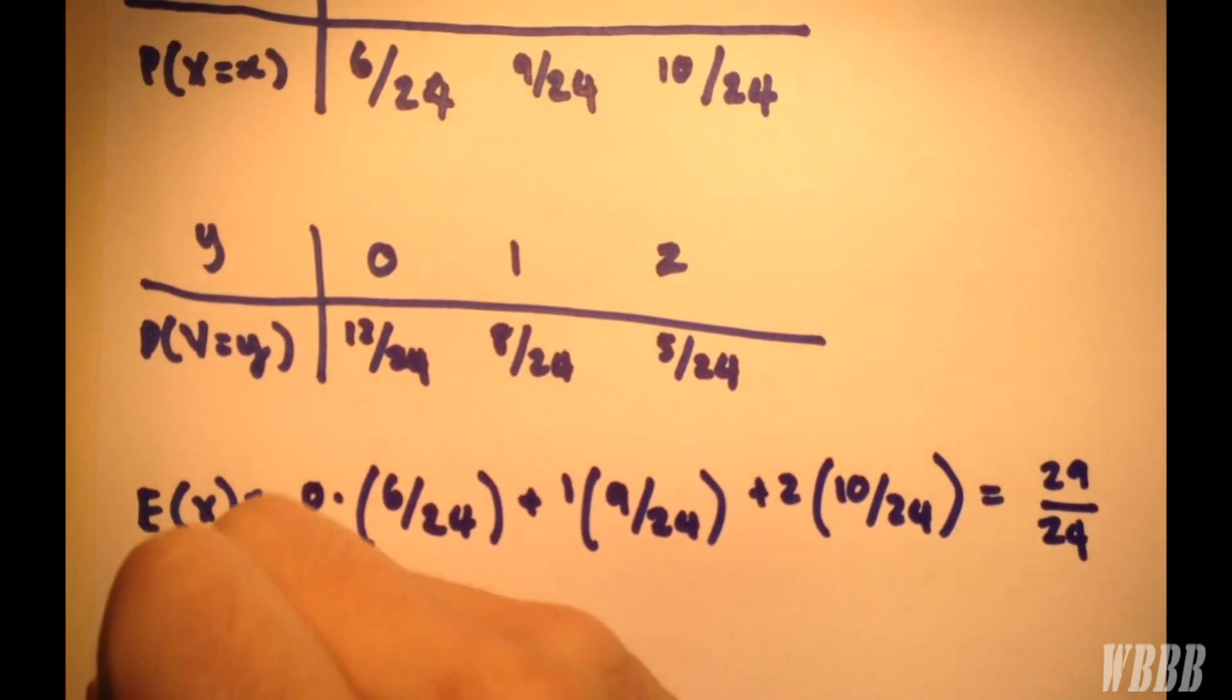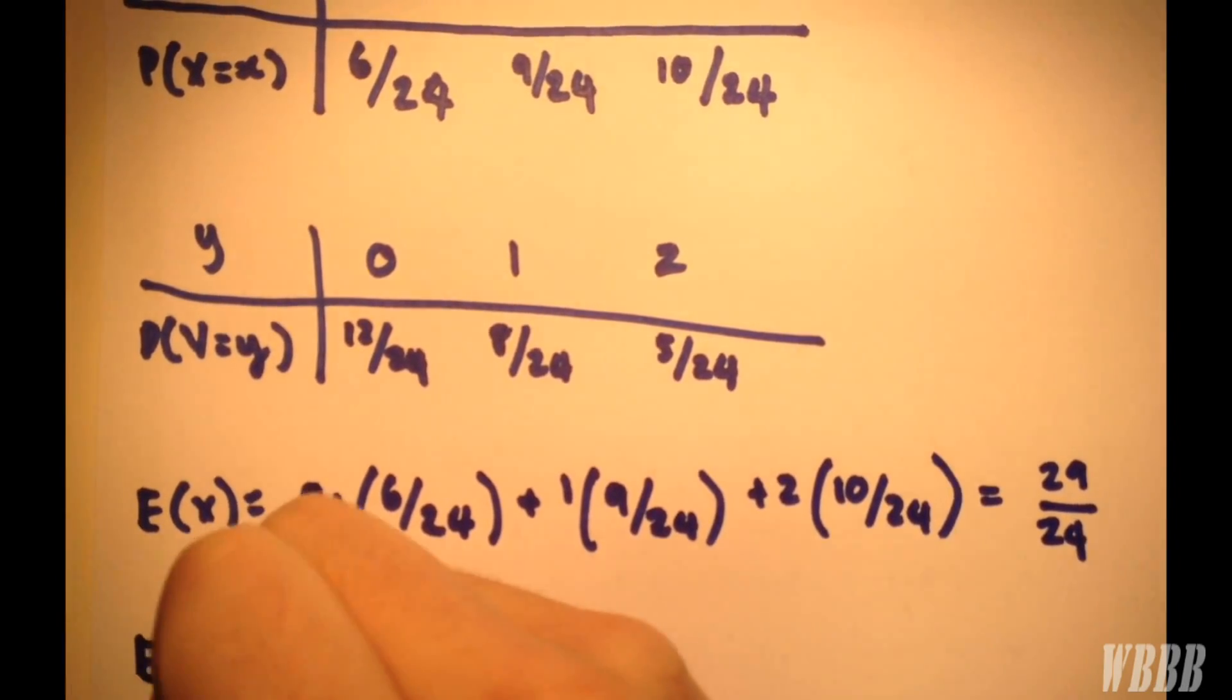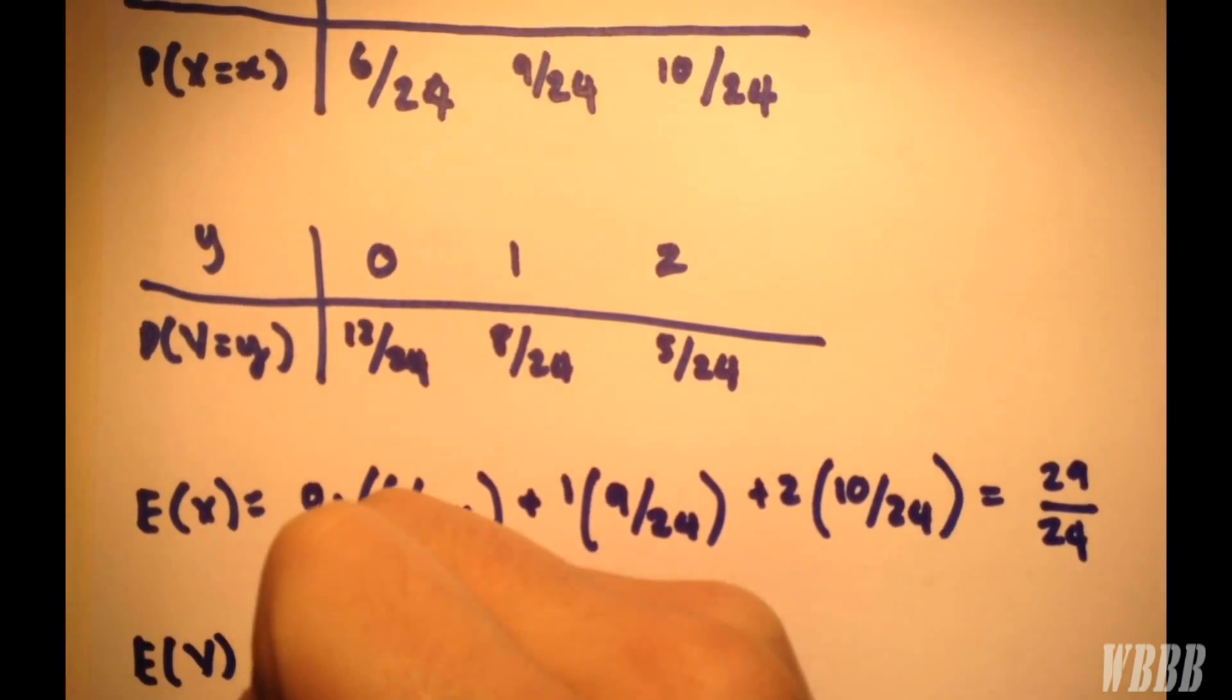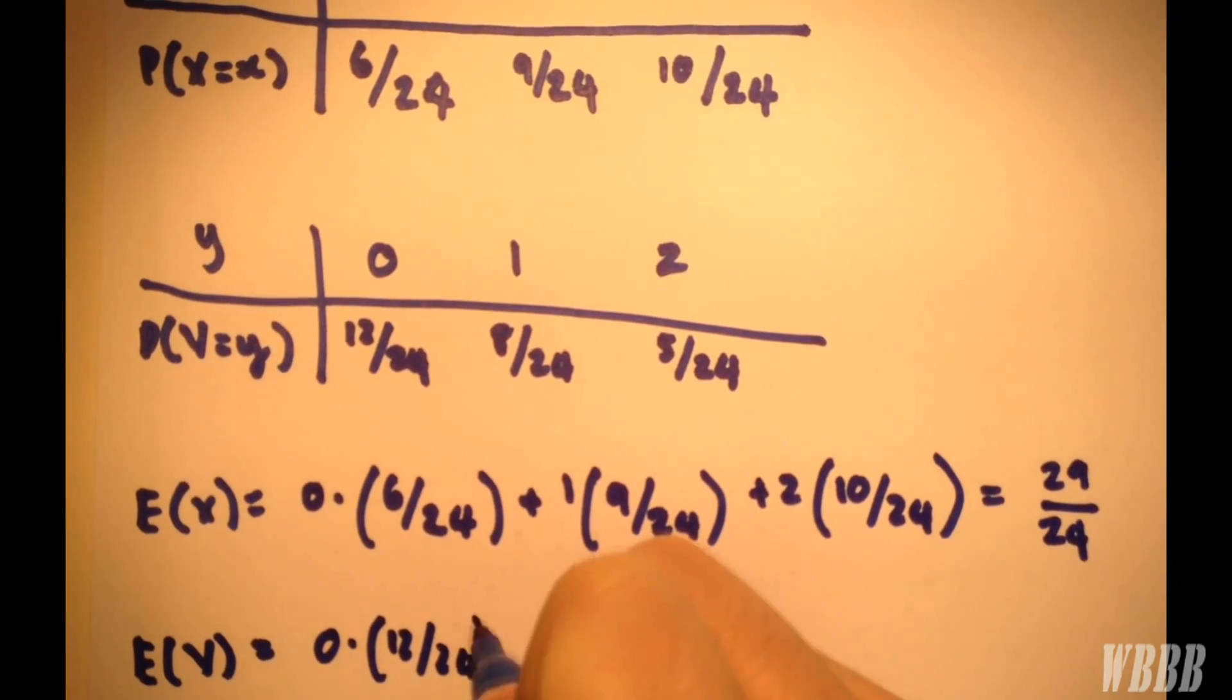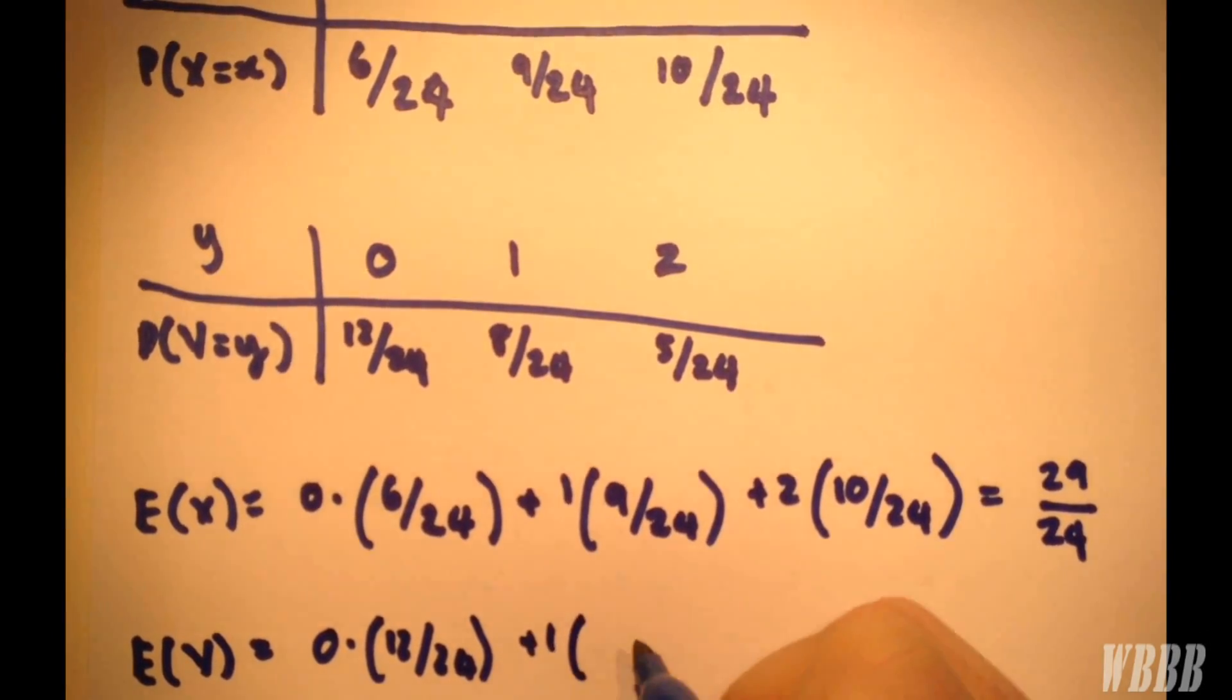And for y, we follow the same procedure, which I'm sure you understand by now. So for y, we have 0, plus 1, plus 1.